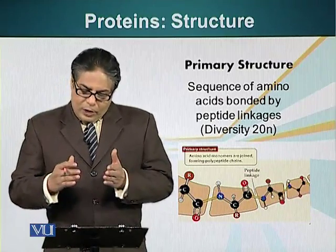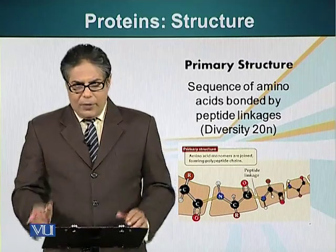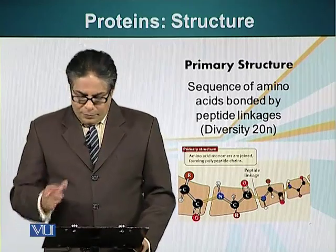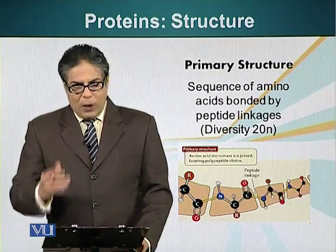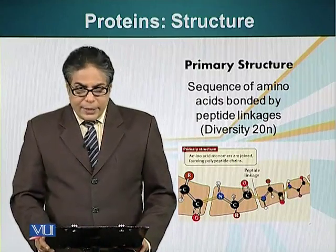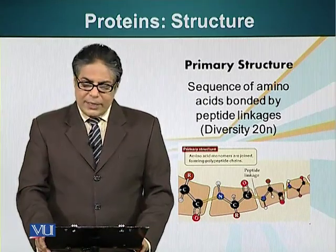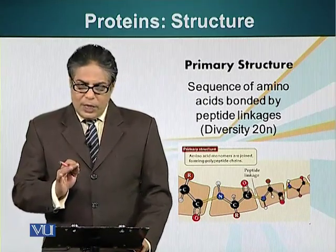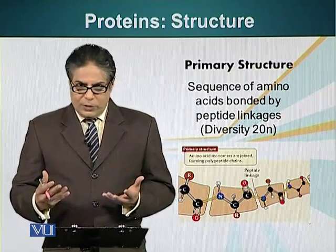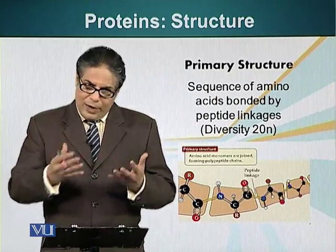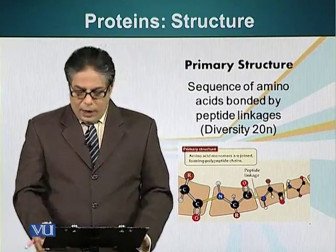If we are talking about a medium-sized protein, say 100 amino acids long, with this formula it will be 20 to the power of 100. This is a very large number. In fact, this number is so large that we don't have enough electrons in this universe — the number of electrons in the universe is less than 20 to the power of 100.